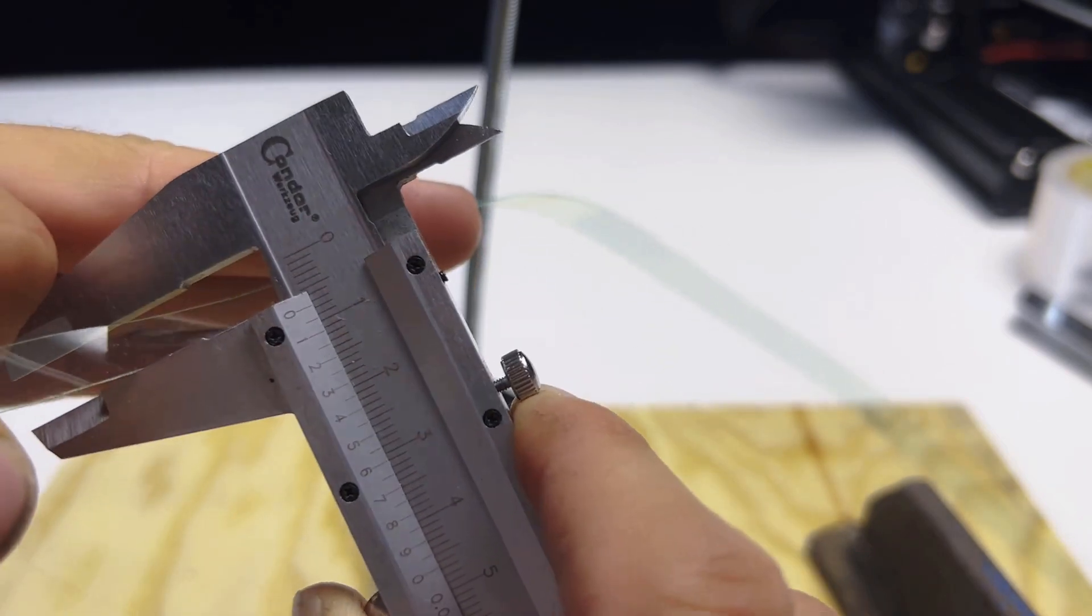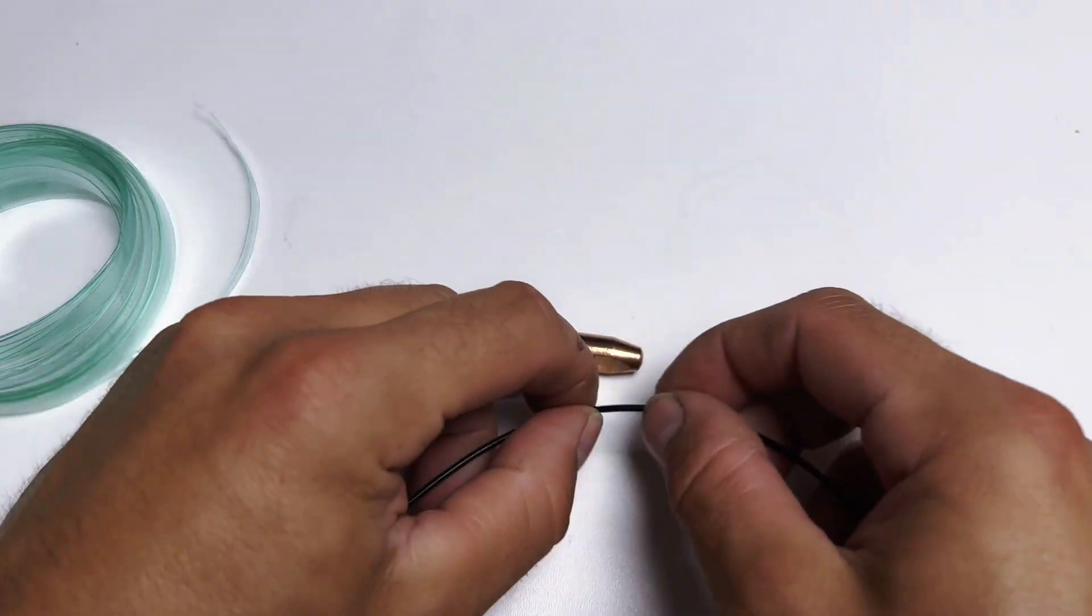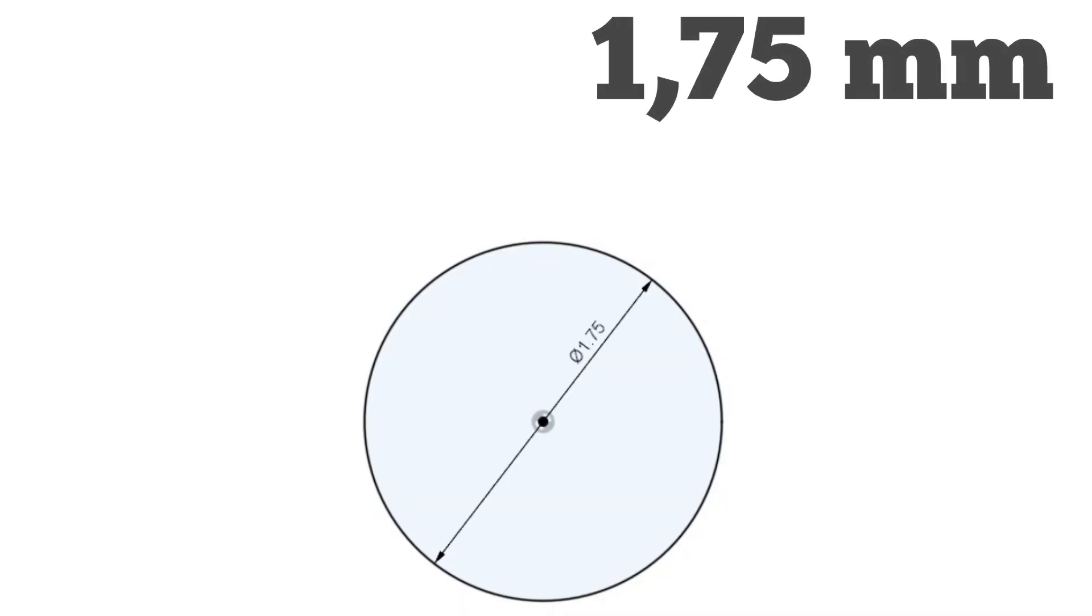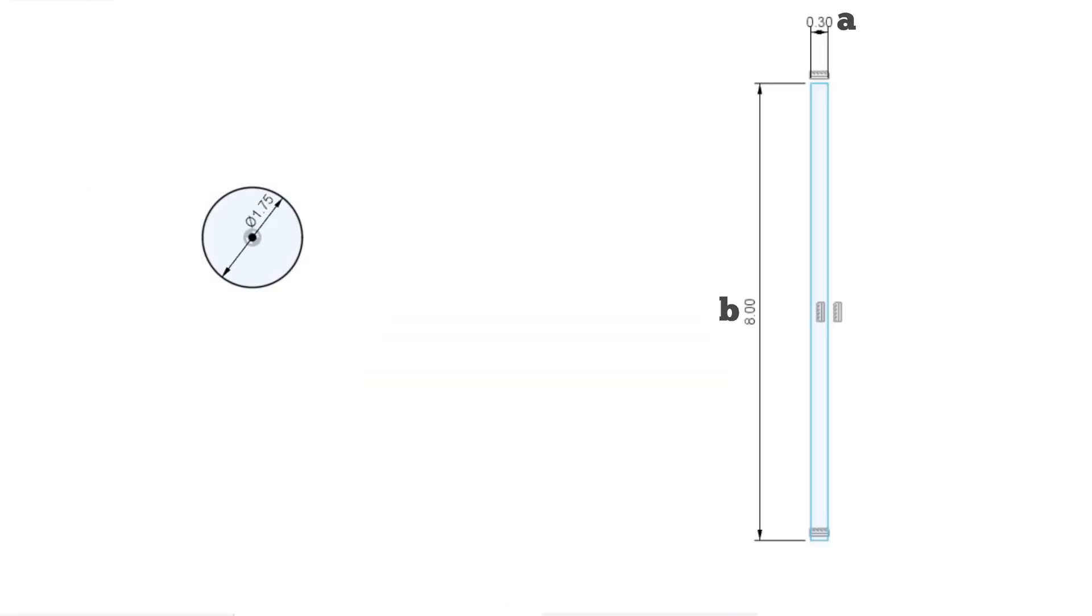For calculating the strip thickness, I chose a simple formula. Since my aim is to produce a 1.75mm filament, its cross-sectional area is 3.14 times the square of R. Substituting the numbers, it's 3.14 times the square of 0.875, resulting in 2.40 square millimeters. We know this is the content of the circle, and we have to fit the content of the rectangle into it.